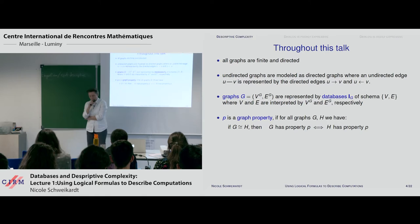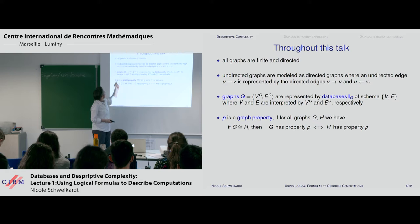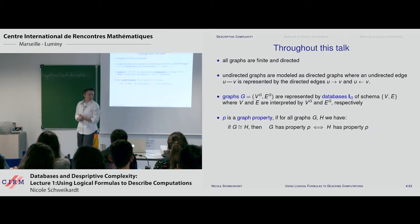What is a graph property? For me, a graph property is something that cannot distinguish between isomorphic instances of two graphs. Formally, P is a set of graphs, and P will be called a graph property if for all graphs g and h, if g and h are isomorphic, then g has this property if and only if h does.